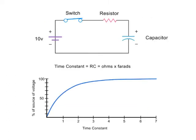For example, in this circuit, if you have a 1 megaohm resistor and 5 microfarad capacitor, the time constant would be 5 seconds.